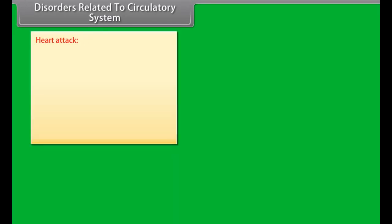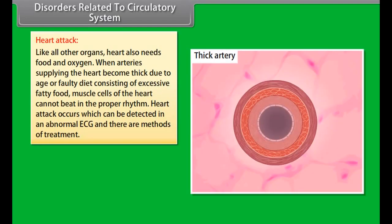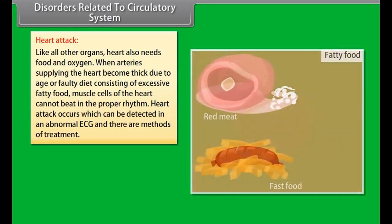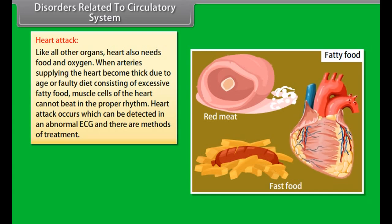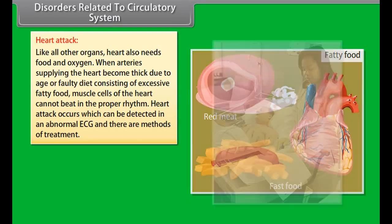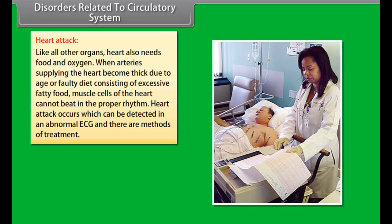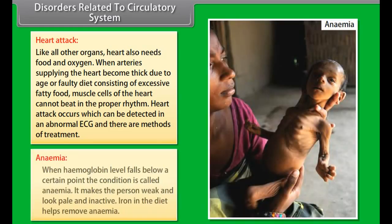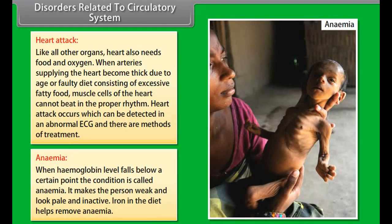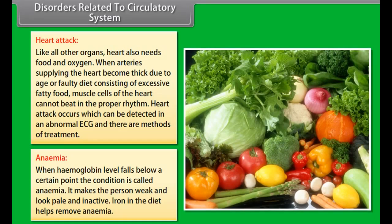Disorders related to the circulatory system: Heart attack occurs when arteries supplying the heart become thick due to age or a diet consisting of excessive fatty food, so the muscle cells of the heart cannot beat in the proper rhythm. It can be detected by an abnormal ECG and there are methods of treatment. Anemia occurs when the hemoglobin level falls below a certain point, making the person weak, pale and inactive. Iron in the diet helps remove anemia.